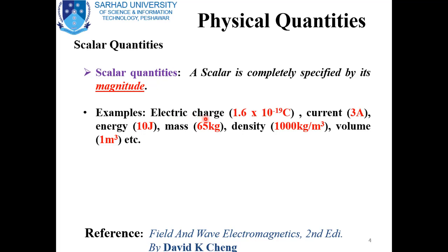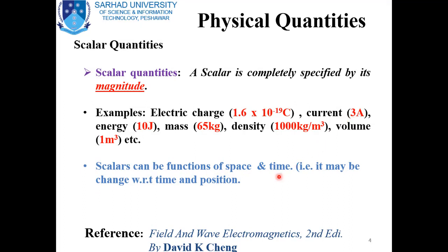Following are examples of scalar physical quantities: electric charge, current, energy, mass, density, volume, etc. For example, if we talk about a single electron, the magnitude of electric charge on a single electron is 1.6 × 10⁻¹⁹ coulombs. A scalar can be a function of space and time, meaning a scalar may vary with time and position.